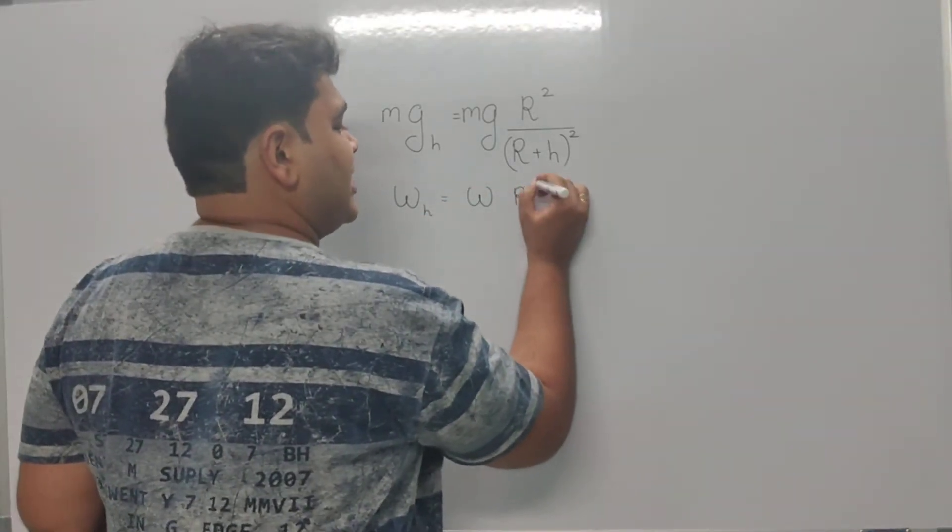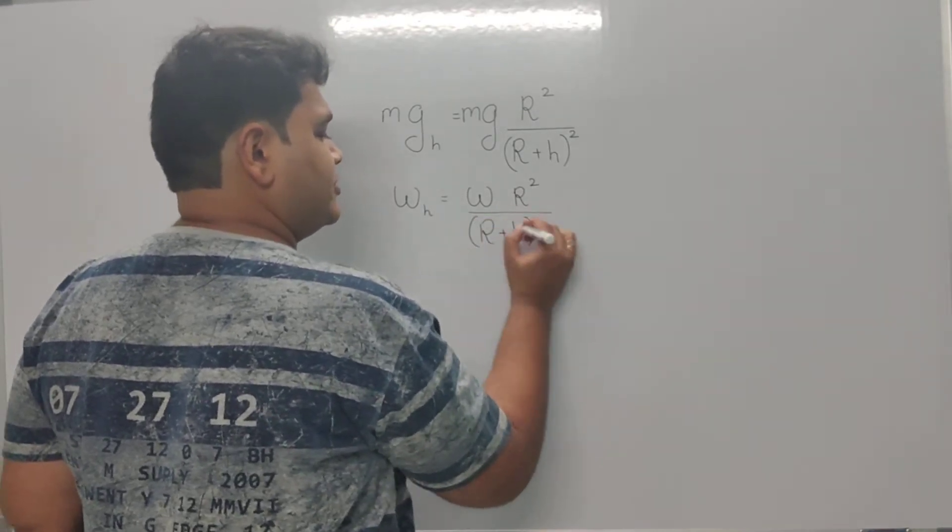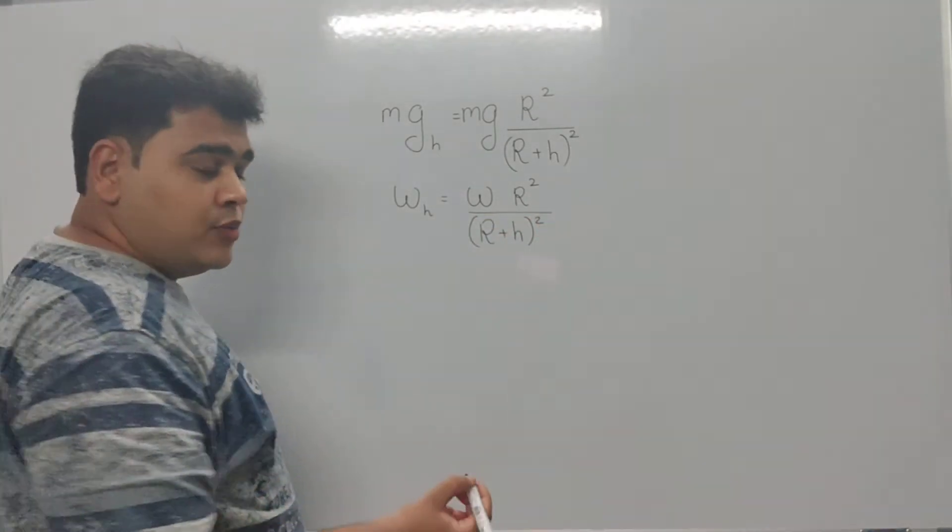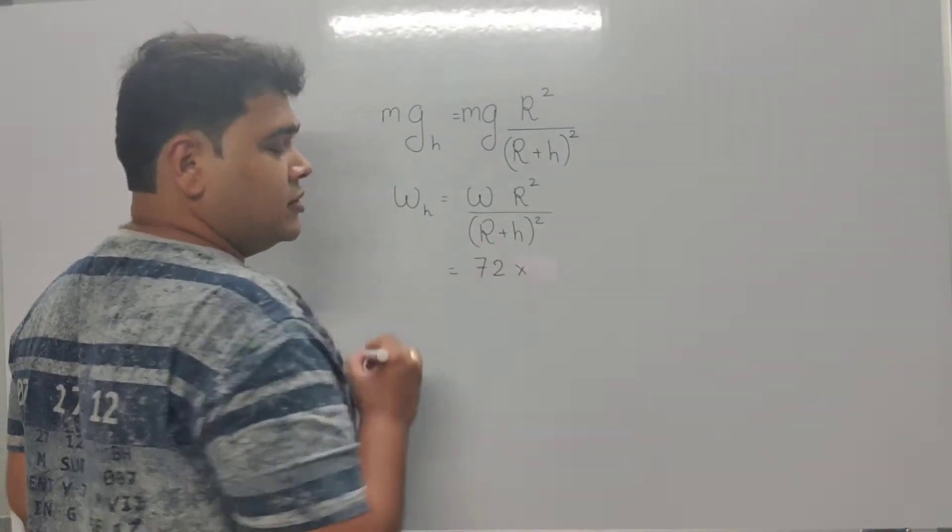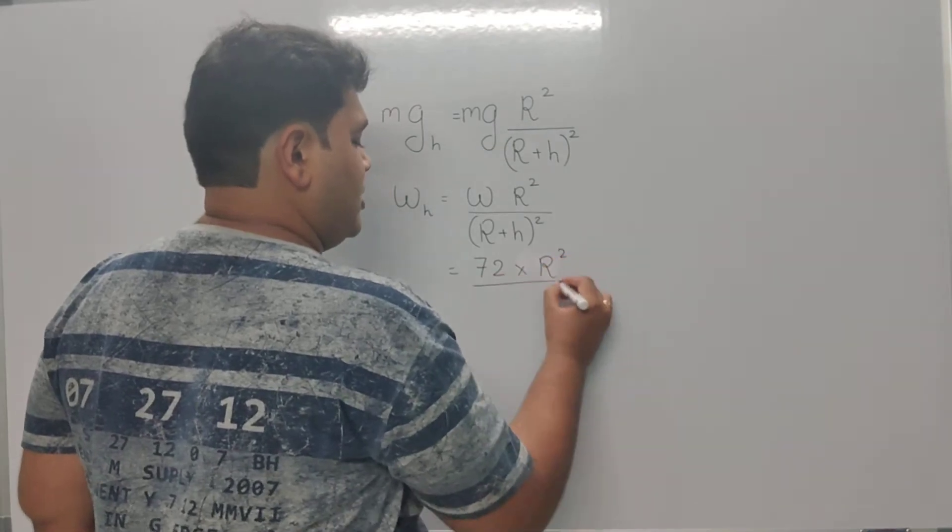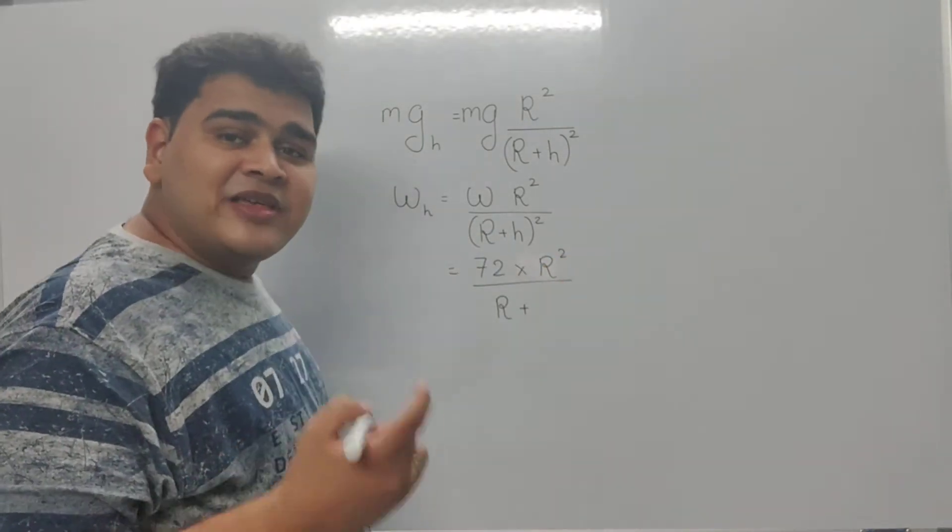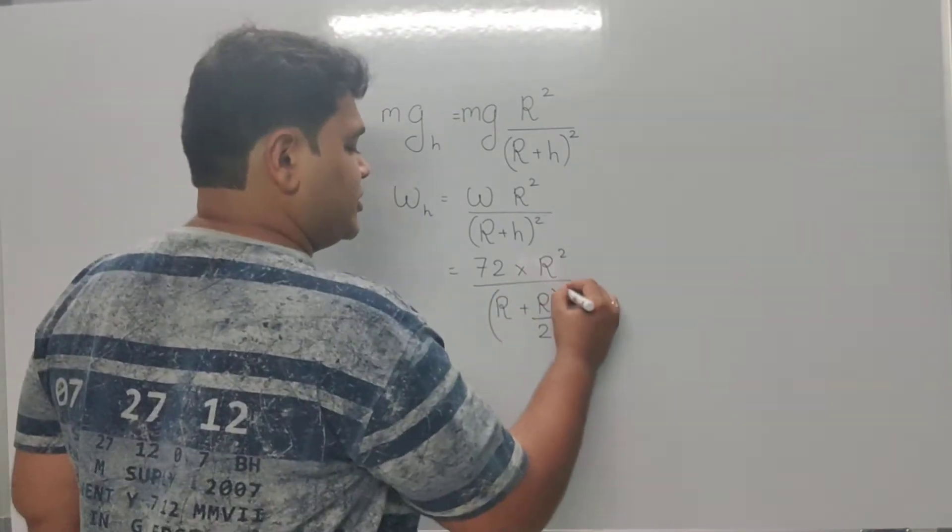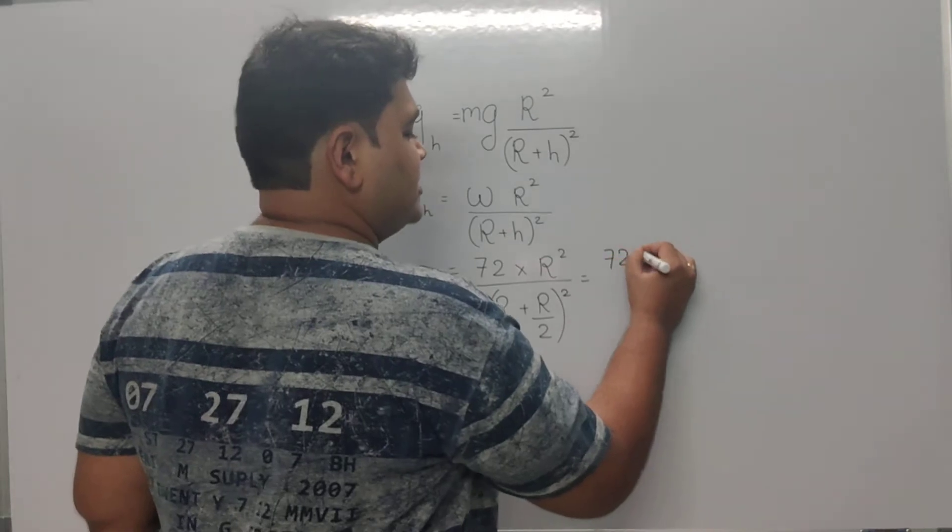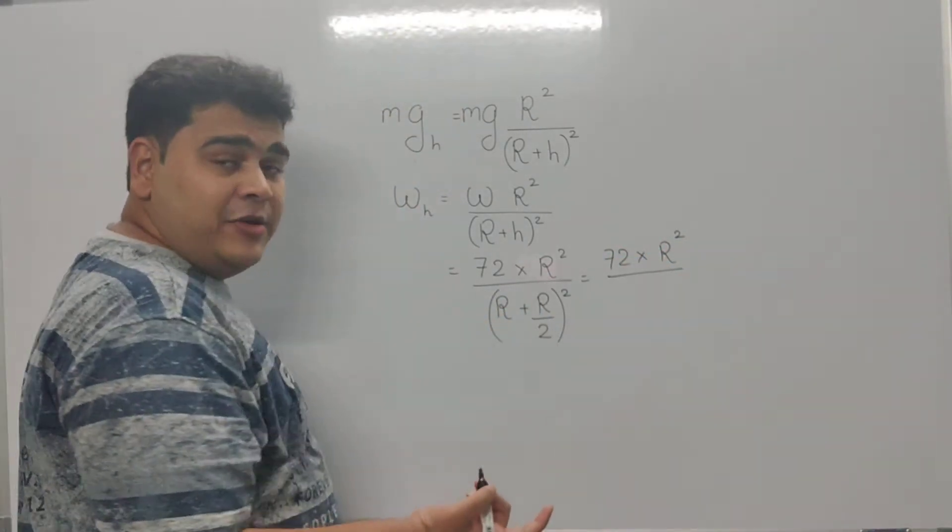So weight is 72 Newton times R² over (R+h)². The h is given as half the radius of the earth, that is R/2. The whole square makes 72 times R² upon 3/2 whole square. That is 9/4 R².